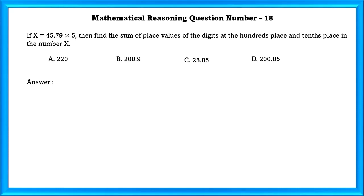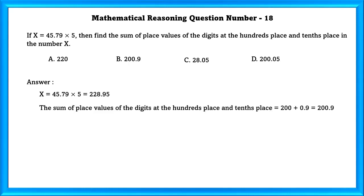Question number 18: If x equals 45.79 multiplied by 5, find the sum of place values of digits at the 100th place and 10th place in the number x. If we multiply 45.79 by 5, we get x equals 228.95. The sum of the place values of digits at the 100th place and 10th place is equal to 200.9.